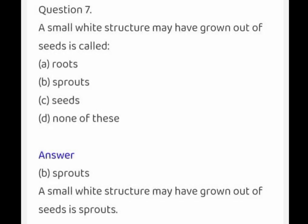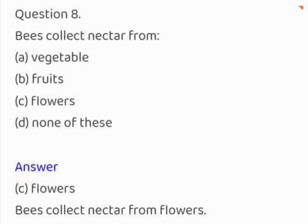A small white structure that may have grown out of seeds is called: roots, sprouts, seeds, or none of these. The correct answer is sprouts. Bees collect nectar from: vegetables, fruits, flowers, or none of these. The correct answer is flowers.